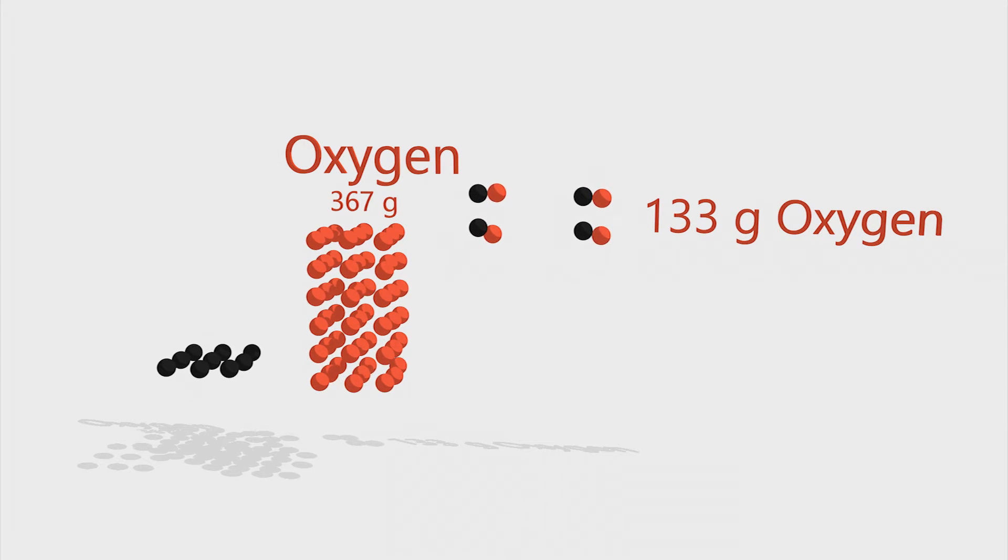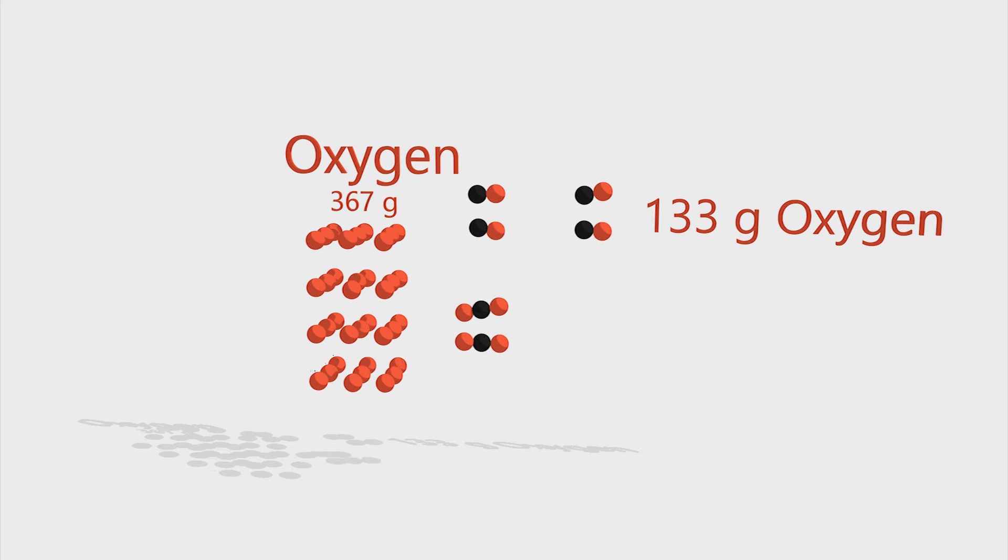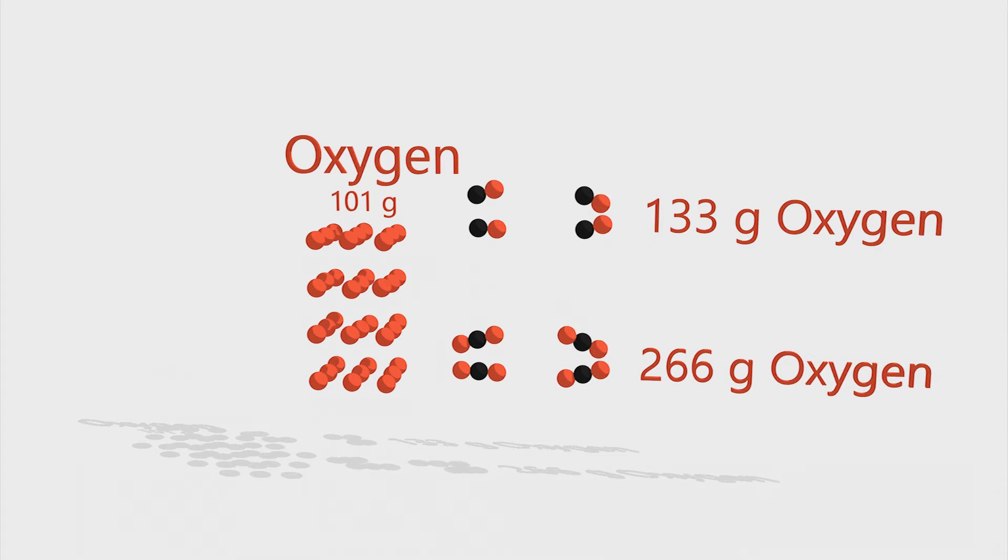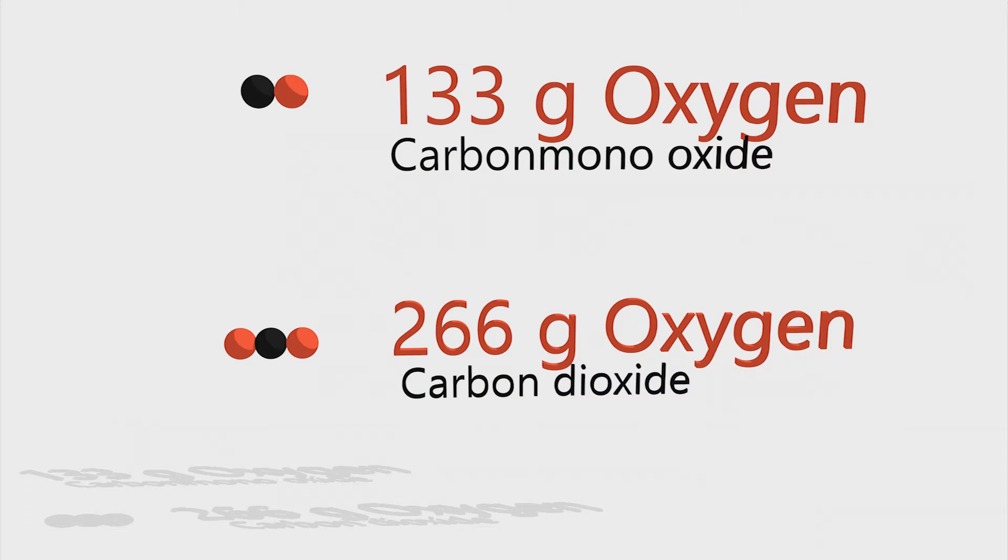It can also combine into carbon dioxide, taking 266 grams of oxygen in the process. Now finally, here's what the law states: if I take the second element, in our case oxygen, and I divide the masses used in different processes, I will always get a small integer value.